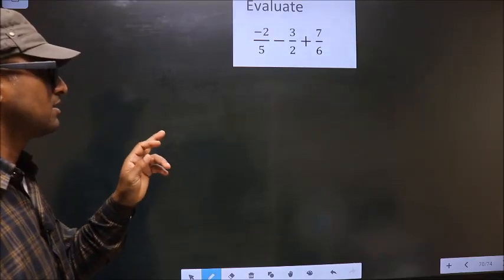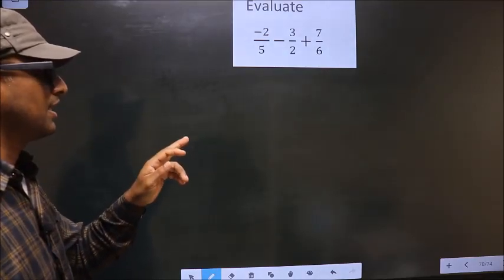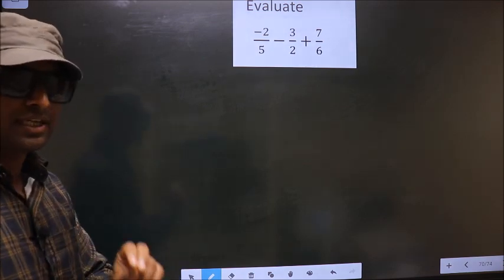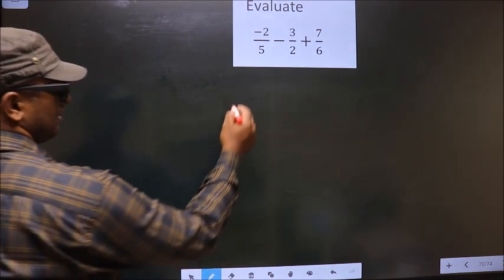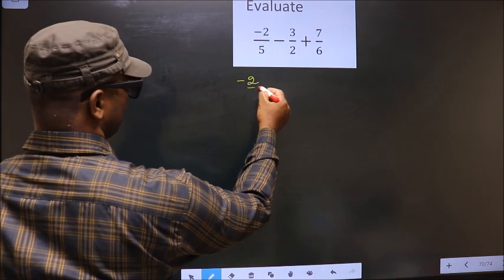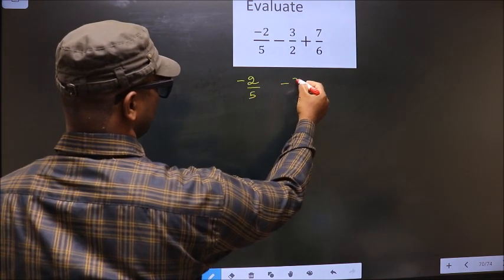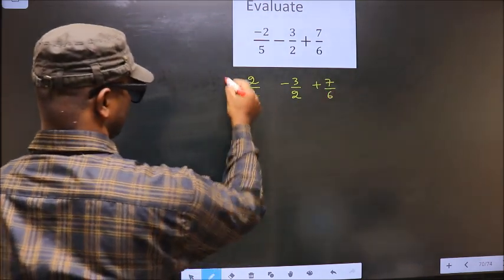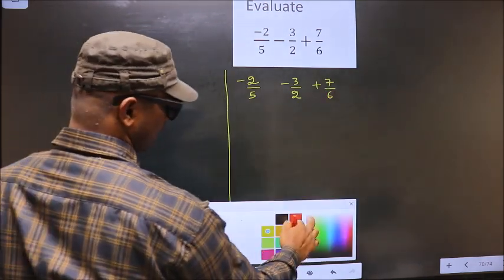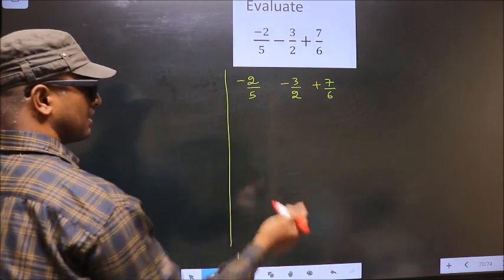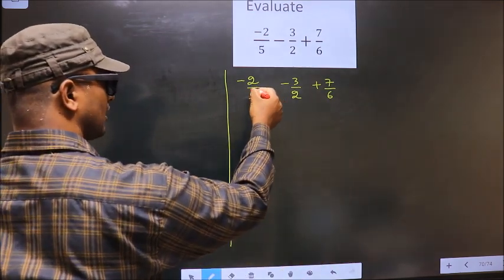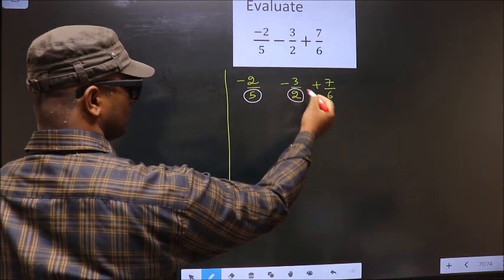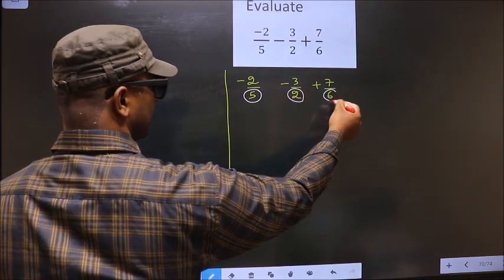Evaluate minus 2 by 5 minus 3 by 2 plus 7 by 6. In this fraction the denominator is 5, here the denominator is 2, and here the denominator is 6.